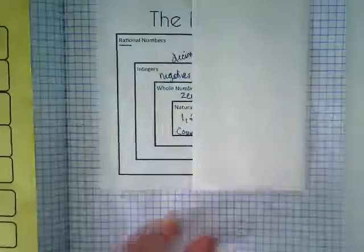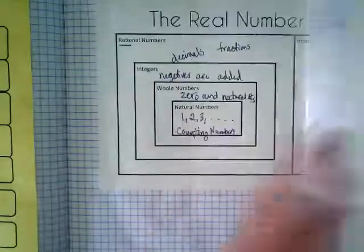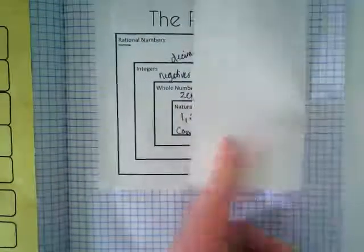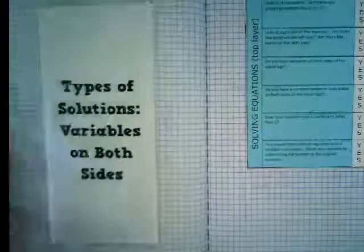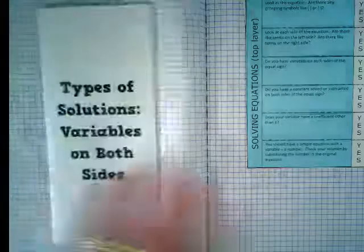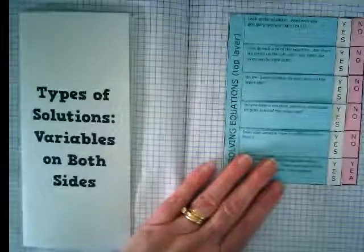Okay, and then notice, those of you gluing, I'm seeing my new people, it's folded so it fits. Next two pages should have types of solutions, variables on both sides, which is this trifold, and our favorite new foldable.